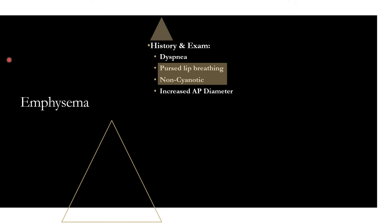These patients are also going to have an increased AP diameter, also known as a barrel chest. This is because they have all this retained air from air trapping due to the loss of elastic recoil. Their lungs and chest are just going to be really broad. That's why in your OSCEs you always check the AP diameter — it's basically for emphysema.